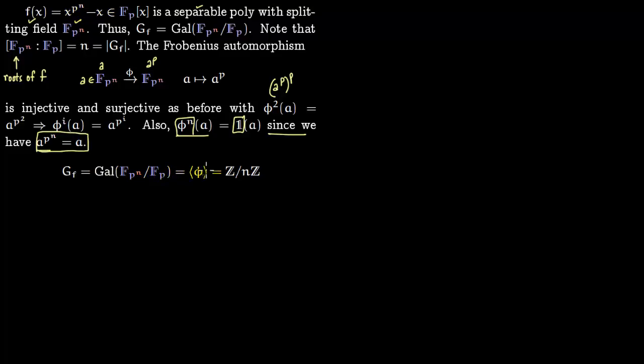The Galois group is completely generated by this phi. This phi has order n and this is a cyclic group. Since it is a cyclic group you can write it as Z/nZ.